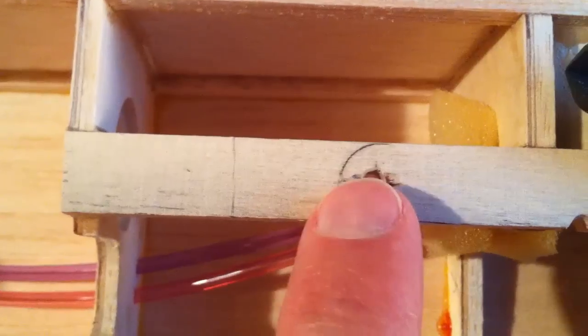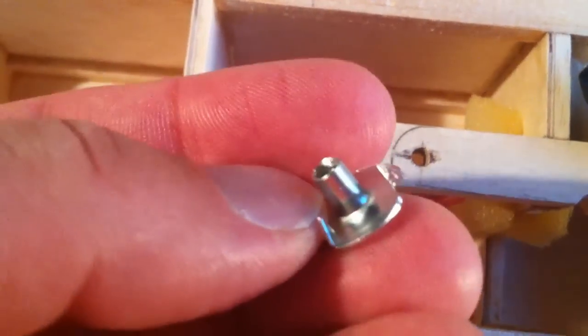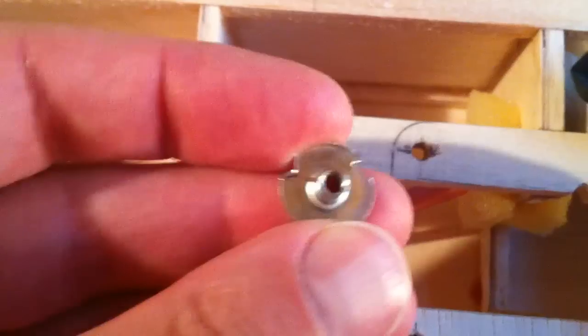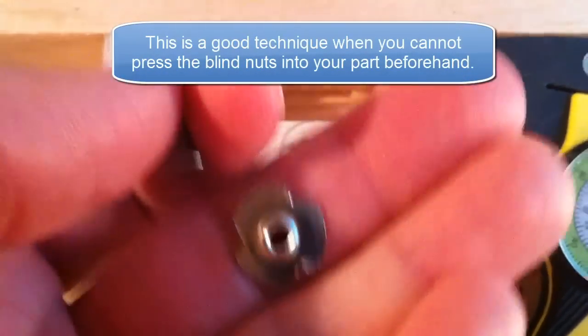And luckily for me, the clearance size that I made this hole is already the diameter of the throat on the blind nut. And that'll give me perfect access to start the blind nut. And then what I'll do is I'll use the screw itself to pull that blind nut into the wood.